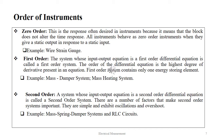An example of a zero order system is a wire gauge. The system whose input-output equation is a first order differential equation is called a first order system. The order of the differential equation is the highest degree of derivative present in the equation. First order systems contain only one energy storing element. Mass-damper systems and mass-heating systems are examples of first order systems.